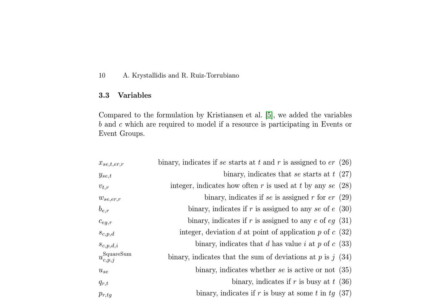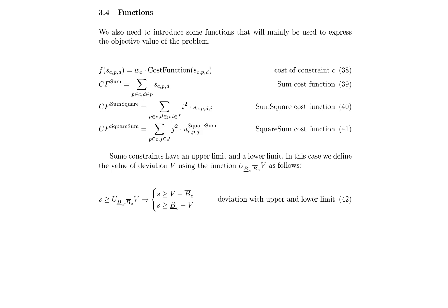Functions F_SC_P_D, C-F-Sum, C-F-Sum-square, and C-F-square-sum are defined to calculate the cost of constraints, sum of cost functions, sum of square cost functions, and square sum cost functions respectively. Some constraints have upper and lower limits, and the deviation value V is defined using the function UB_C_B_C_V. This function is crucial for handling constraints with both upper and lower bounds, ensuring that the deviation does not exceed these limits, highlighting the complexity of resource scheduling and event planning.